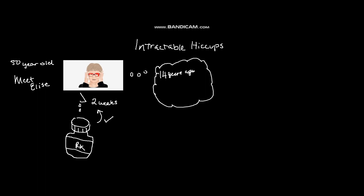Her patient history was reviewed, and she revealed that 14 years ago she had an episode of vertigo, nystagmus, and dysarthria. She had a negative workup done, as MRI was not yet available then.